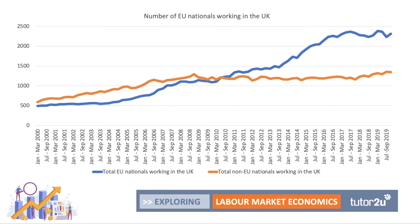The number of EU nationals working in the UK has increased over the last 20 years, particularly when the new EU countries joined — Poland, the Czech Republic, Hungary, the Baltic States, Bulgaria and Romania joining in 2007. But actually the number of EU nationals working in the UK has been broadly flat for the last three to four years at just under two and a half million. There's been a long fall in long-term immigration to the UK after the referendum, particularly amongst EU citizens and people without a definite job lined up. Meanwhile, the number of non-EU nationals working in the UK has been rising — that's the orange line.